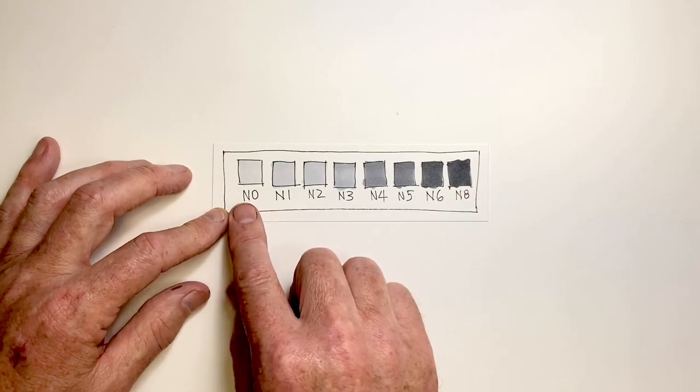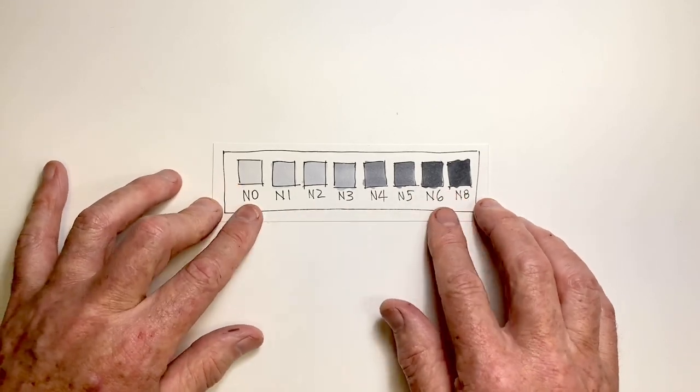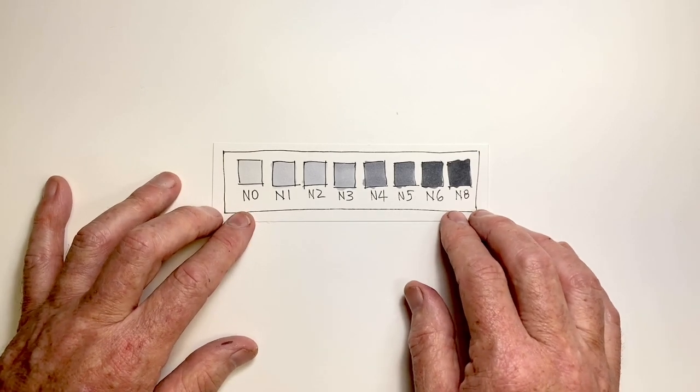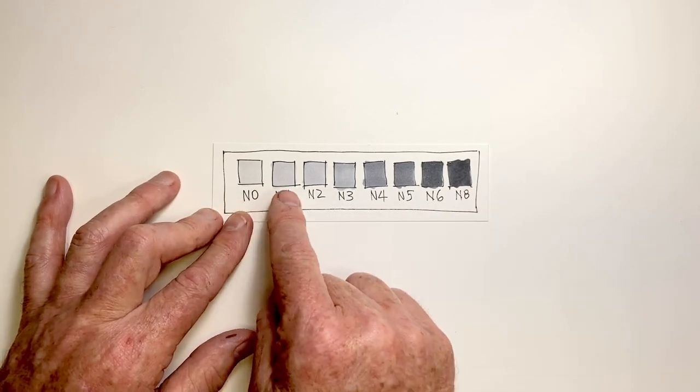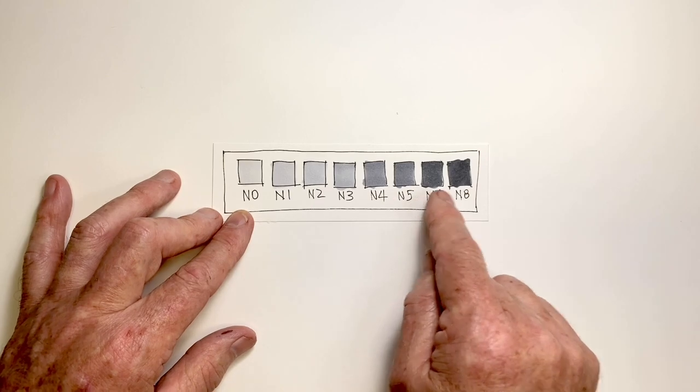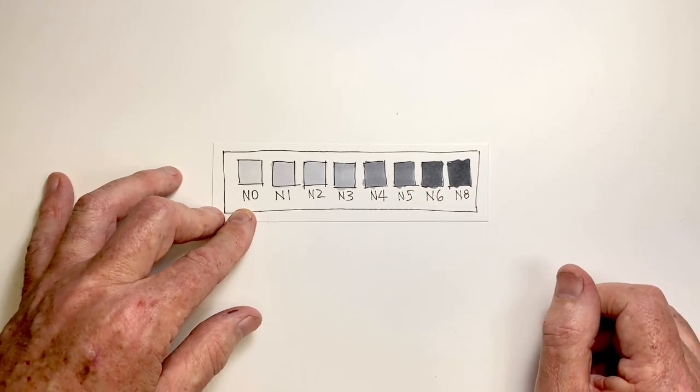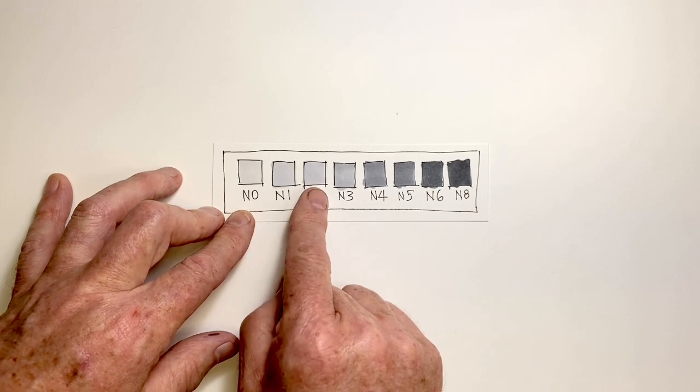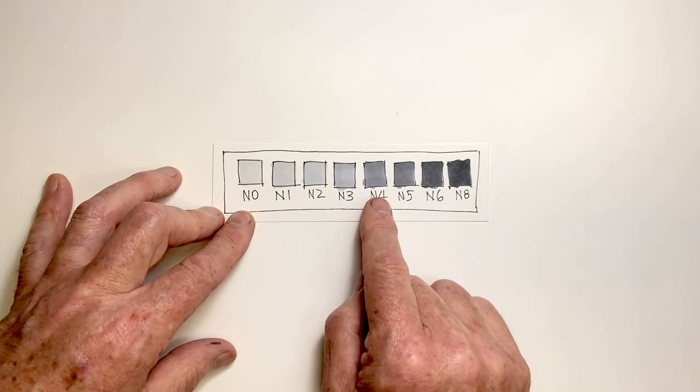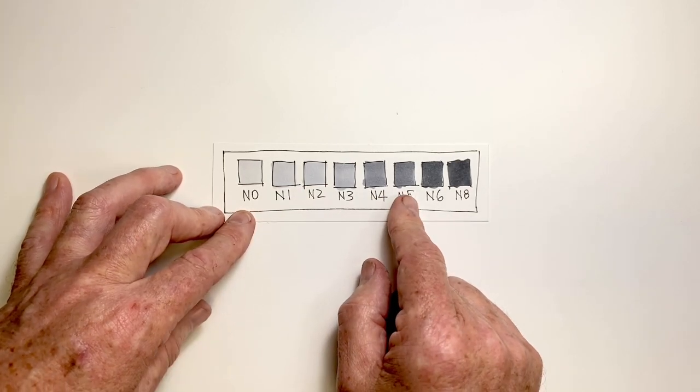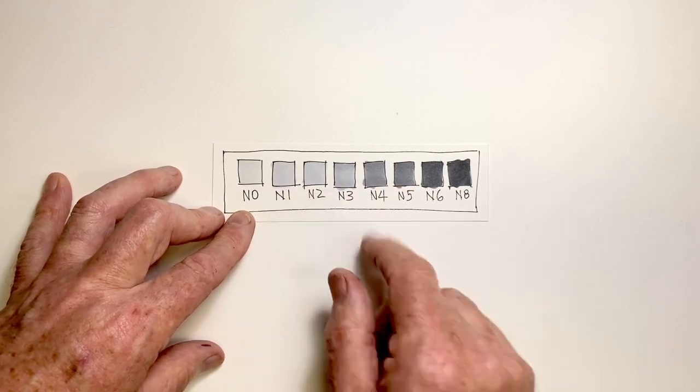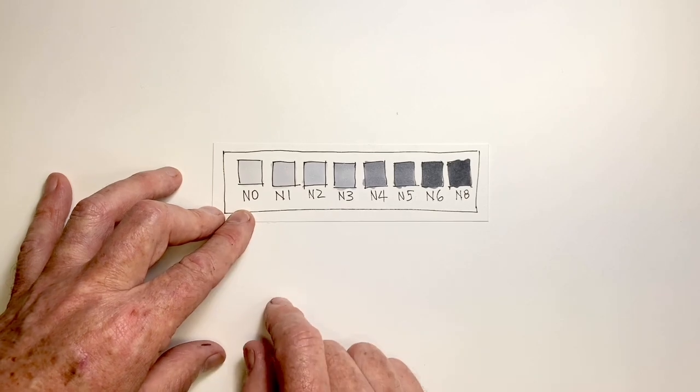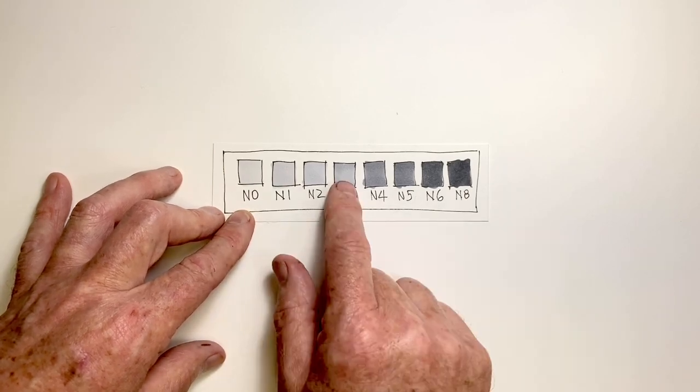We can see part of the value of having a color chart such as this straight away, because in fact there's not necessarily an even jump in tone from marker to marker. To my mind, there's less difference between N1 and N2, and N4 and N5, than there are between other adjacent tones, such as N0 and N1, or N3 and N4.